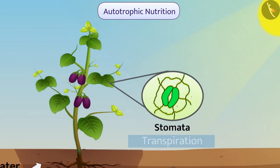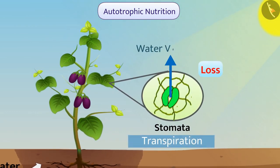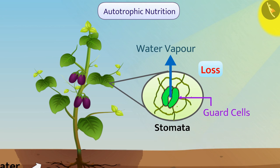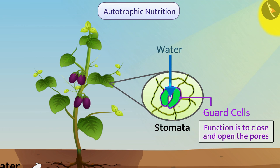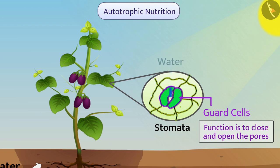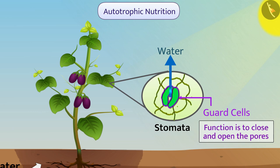Pores of stomata cause a significant amount of water loss in the form of water vapor. To prevent this, there are guard cells around the pores of stomata whose function is to close and open the pores. When water enters inside the guard cell, they swell and the stomatal pores open. When water comes out of the guard cell, they shrink and the stomatal pores are closed.